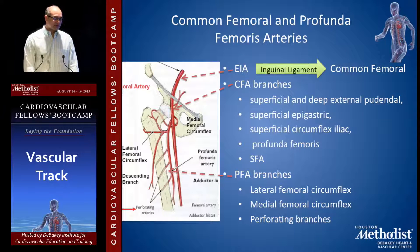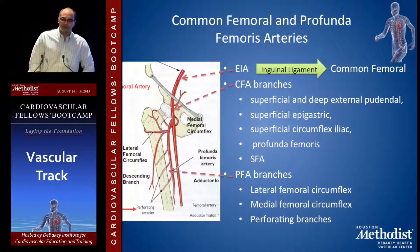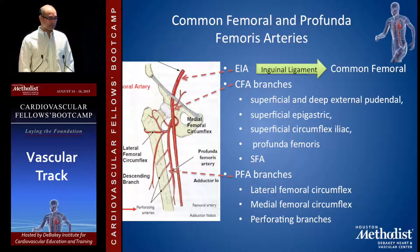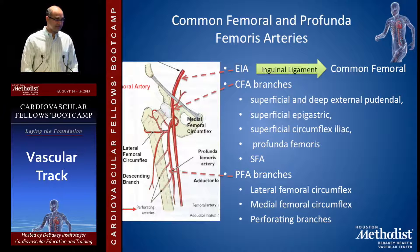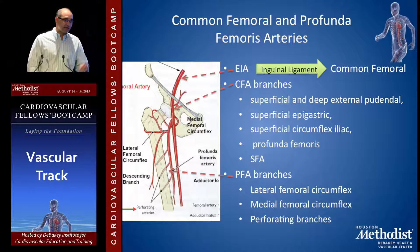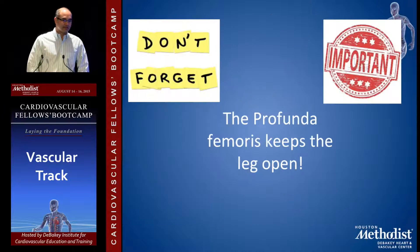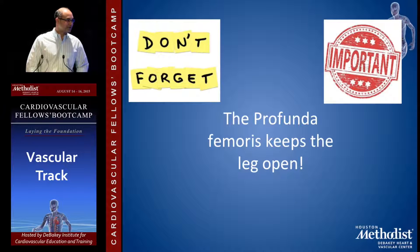The common and profunda femoris arteries are the most talked about in all vascular patients. The external iliac, once it crosses the inguinal ligament, becomes the common femoral. The common femoral branches into the superficial and deep external pudendal, superficial epigastric, superficial circumflex iliac, and gives off the profunda femoris artery, then continues as the superficial femoral artery. The profunda femoris is very important — it gives a huge network of collaterals, not just to the hip but also to the lower extremity. The profunda keeps the leg open. Do not forget that.